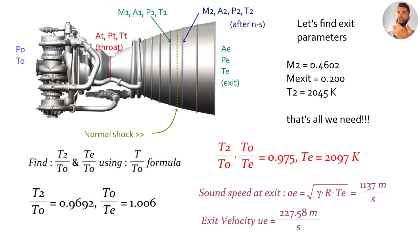We can use some stuff. We can use the M2, M exit and T2 to get the parameters at the exit. We have M2 after the normal shock is 0.4602. The Mach number at the nozzle exit is about 0.2 and temperature 2 is about 2000 Kelvin. Find T2 over T0 first by plugging in the Mach number at M2 and also TE over T0 by using M exit. Just use the T over T0 formula for isentropic flow conditions. You get the exit temperature as about 2097 Kelvin. Then we can find the exit sound speed as gamma RTE which is 1,137 meters per second and we can get the exit velocity at about 227 meters per second.